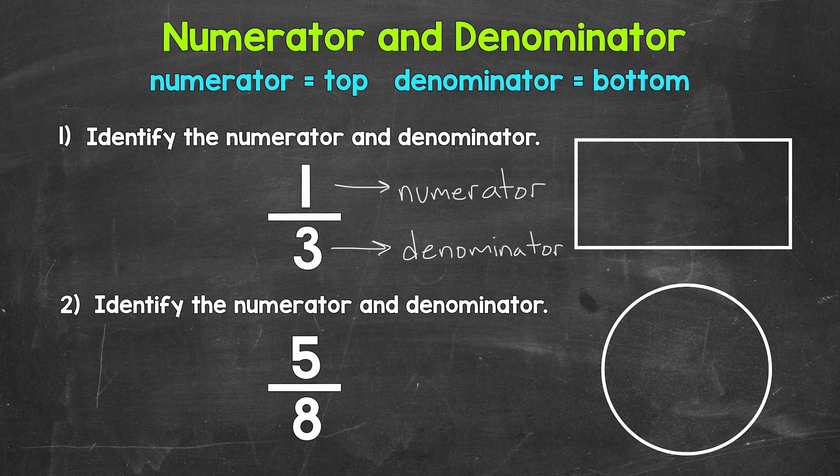And we will use this rectangle off to the side here for our whole. Now do we have to use a rectangle? No. That's just the shape we are using for this example. So 1, 2, 3. This is what we call thirds, 3 equal parts.